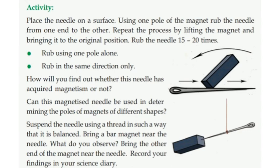Repeat the process by lifting the magnet and bringing it to the original position. We are going to rub using one pole. Keep the needle using one pole and put the needle in the same direction. We will take the same direction.